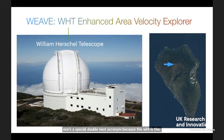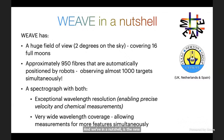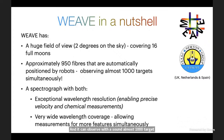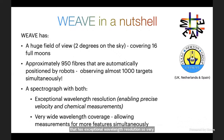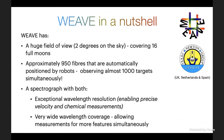WEAVE is a new instrument going on the telescope — in the final stages of construction. It has a huge field of view, approximately two degrees across the sky, equivalent to 16 full moons. It can observe almost 1,000 targets simultaneously, with about 950 fibers all automatically placed by robots rather than human hands. This is combined with a spectrograph with exceptional wavelength resolution — very precise measurement of emission and absorption lines — which is key for measuring very precise velocity and chemical information. It also has a very wide wavelength coverage, mostly the full optical wavelength range.